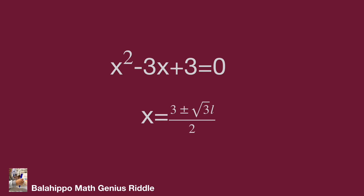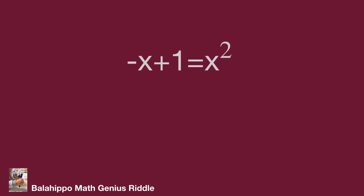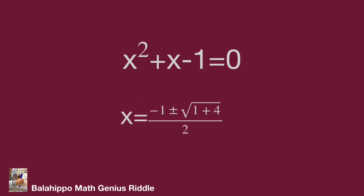Now for the second case: negative 1 equals x squared over (x minus one). Using the same approach, we generate the equation x squared plus x minus 1 equals 0. Adopting the same quadratic formula: x equals negative 1 plus or minus square root of (1 plus 4), all over 2, which equals negative 1 plus or minus square root of 5, all over 2. Those are all the answers. Hope you enjoyed the video. Thank you.